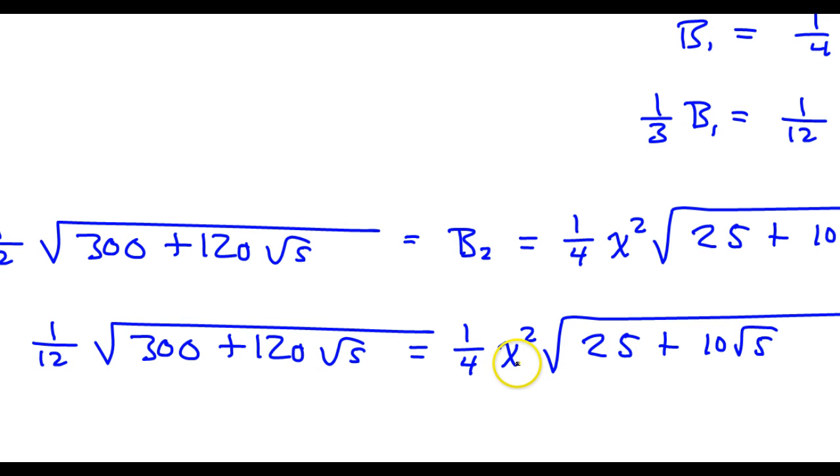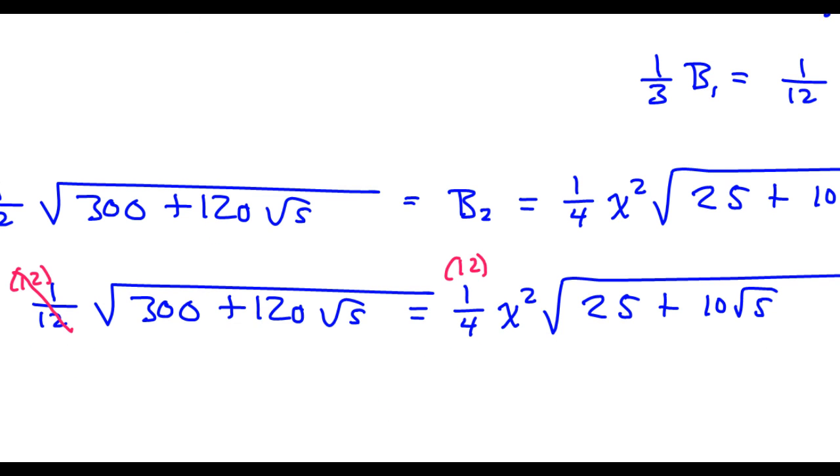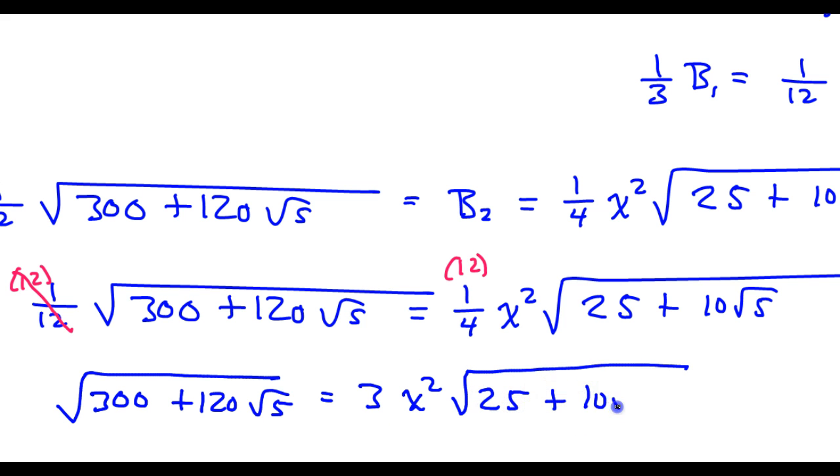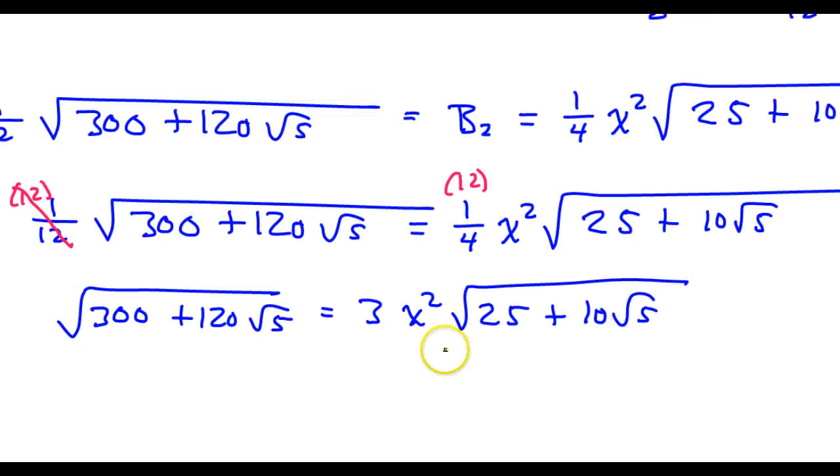But now these two things are going to be equal to each other. So it's just a matter of solving this equation for x. I'm going to multiply both sides by 12. If I multiply both sides by 12 then I am getting 300 plus 120 radical 5. 4 goes into 12 3 times. So that's 3 x squared. And then I've got this radical 25 plus 10 radical 5. So shooting for getting x squared by itself. How about if we divide both sides by 3 radical 25 plus 10 root 5.